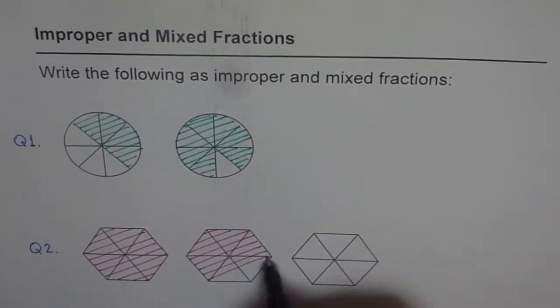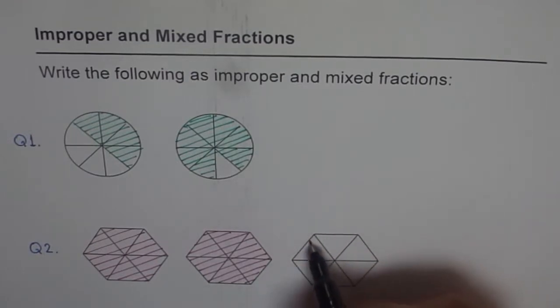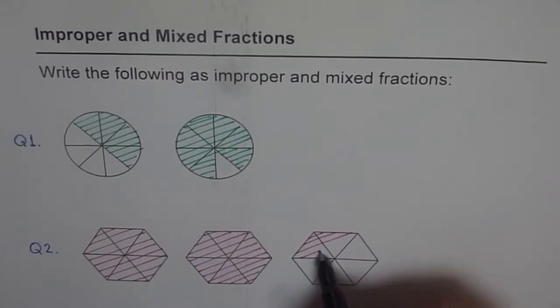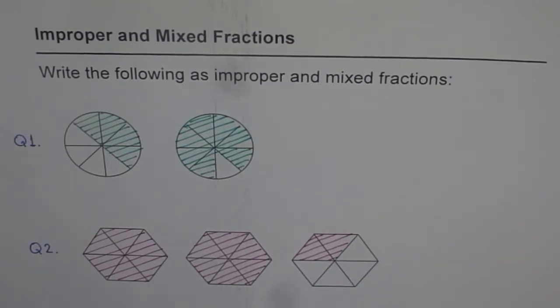So I've already shaded 2 wholes, right? And in the third one, how many do you want me to shade? Let me shade just these two. Or rather, 1 third of this. So you have to write them as improper and mixed fractions.